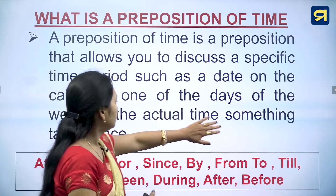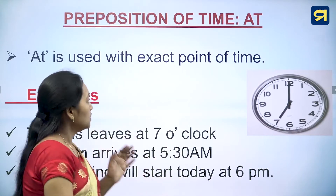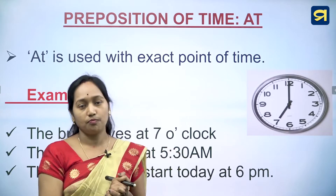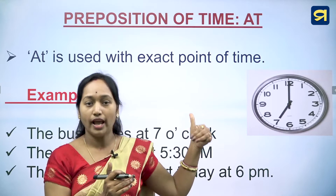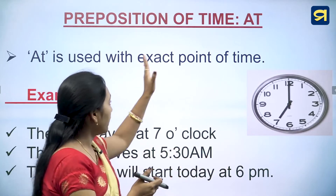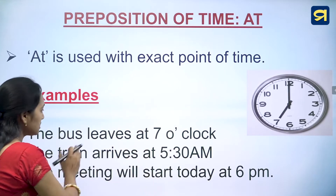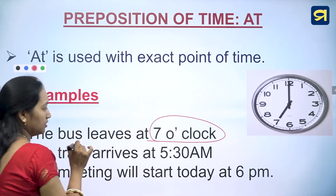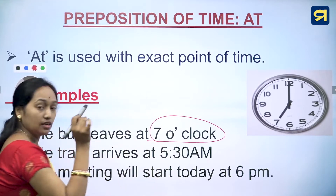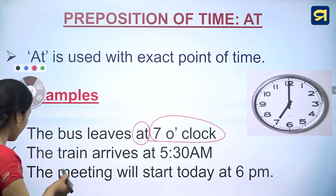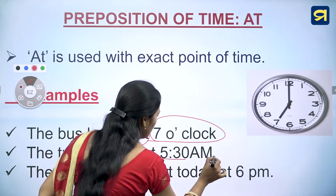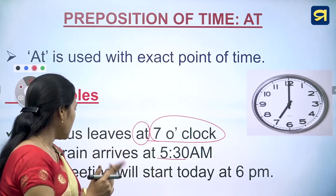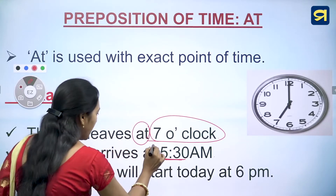The preposition 'at' is used with an exact point of time. Just as we use 'at' for exact location, we also use it for exact time. For example: the bus leaves at 7 o'clock, the train arrives at 5:30 a.m., and the meeting will start today at 6 p.m.